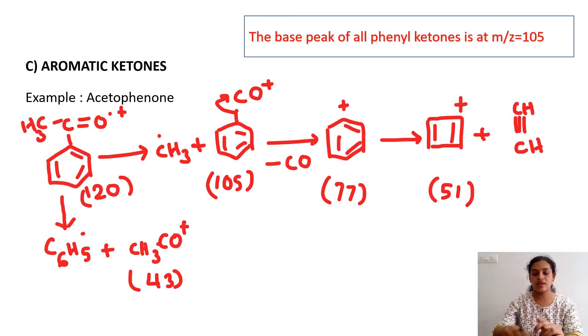The last one in this discussion is that of aromatic ketones. I have taken the example of the most common one, which is acetophenone. Here only alpha cleavage I have discussed because that is the only prominent one. Here alpha cleavage: CH3 dot is expelled and the resultant is benzene ring CO+, which is at m/z value 105. This is the base peak.